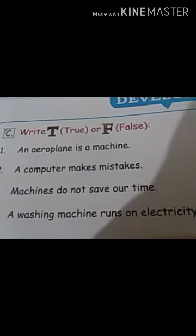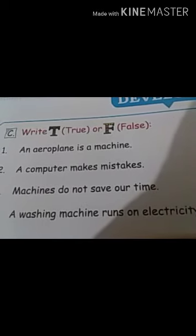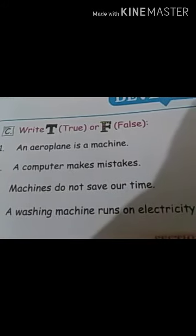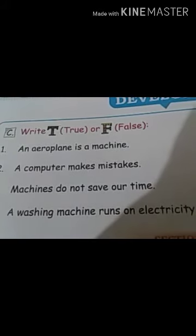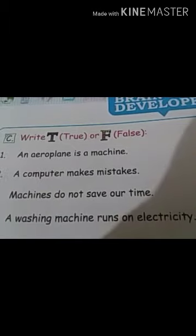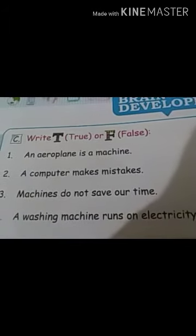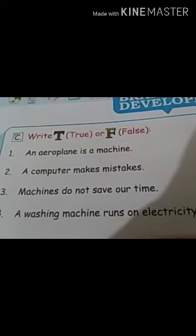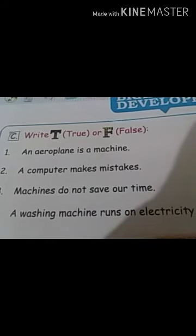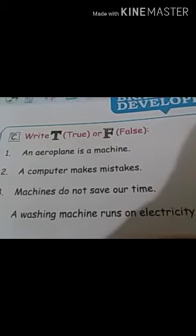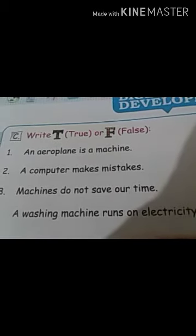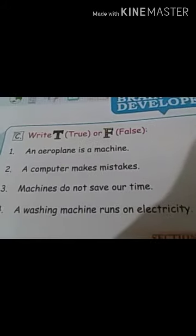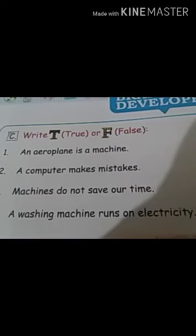The first question is: write T for true and F for false. I want to clarify what is true and what is false. Do you have three noses? No. That means it is false. Do you have one eye? No, we have two eyes, so one eye is false. Do you have a forehead? Yes, we have a forehead, so it is true. I hope you understand true and false.